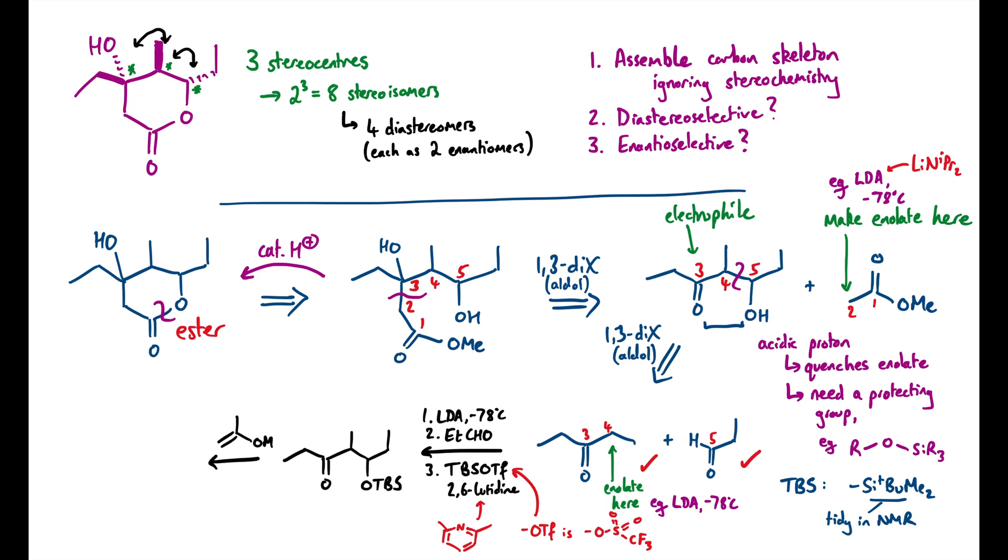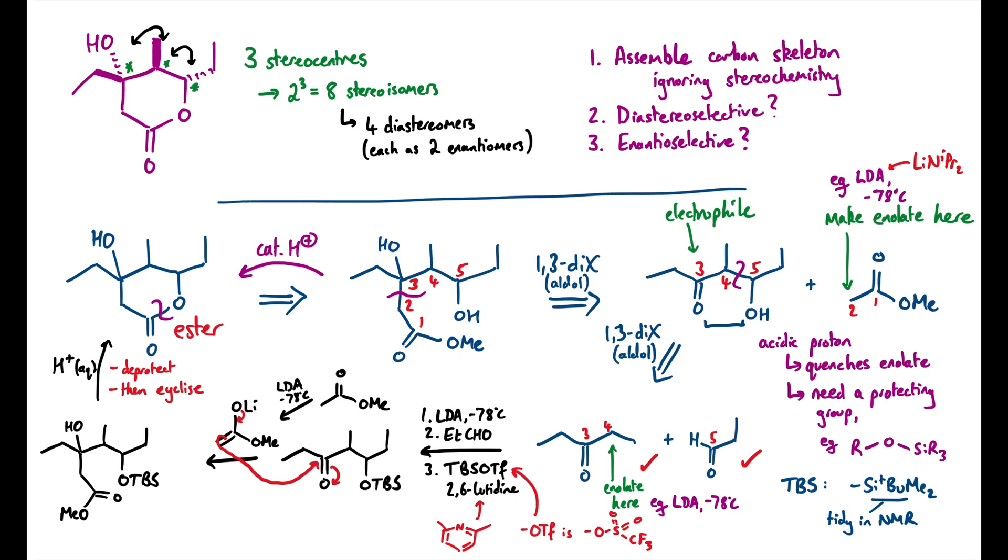I'm going to add the lithium enolate of methyl acetate, which should attack my ketone in another aldol reaction. And then we can see that this was a cunning choice of protecting group, because if I pick a sufficiently strong enough acid, not too strong, but not too mild, but in some sort of aqueous conditions, I can both deprotect the silyl group and then transesterify intramolecularly to cyclise up to my product. So we're all good for assembling the carbon skeleton. Now we should have a think about the stereochemistry.